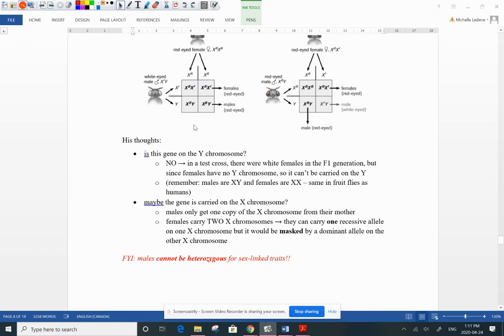So he thought, well, maybe it's on the Y. I mean, if guys are getting it, that would make sense. But that's not true, because when he did a test cross, he actually got females with white eyes. So how can that be? Remember, males are XY, females are XX. They have no Y. So how can they be getting this recessive trait if it's on the Y chromosome? Well, they can't be. So it's not on the Y.